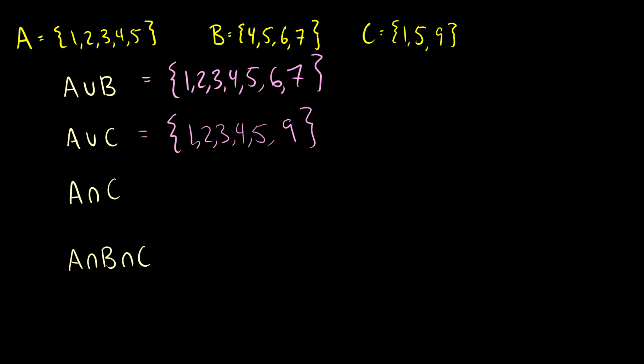Okay, what about A intersection C? So what do A and C have in common? Well, they both have 1s, so that's good. They both have 5s, so that's good. So we have A intersection C is just 1 and 5.